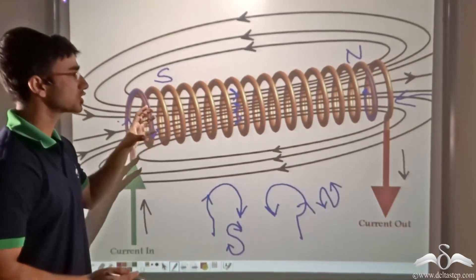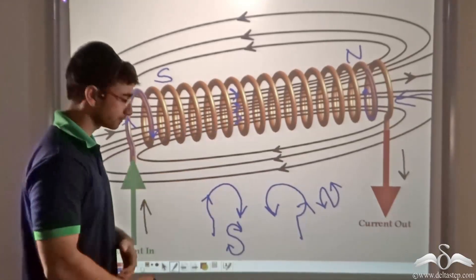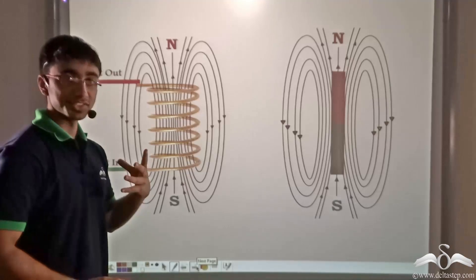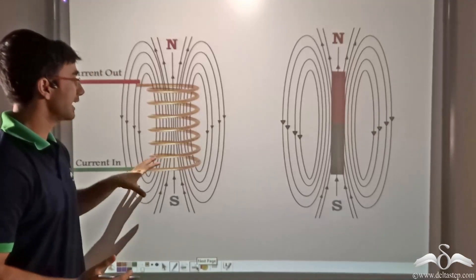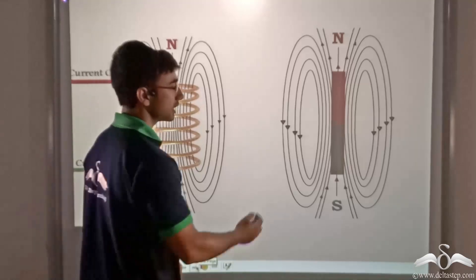So what does a solenoid behave as? Doesn't this behaviour of magnetic field lines seem familiar to you? That is right.